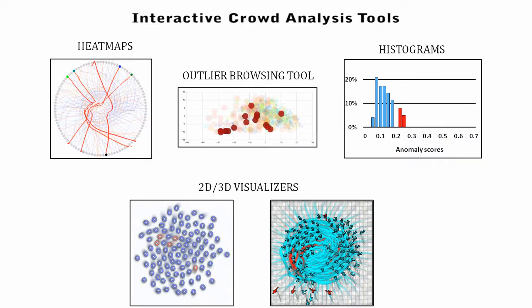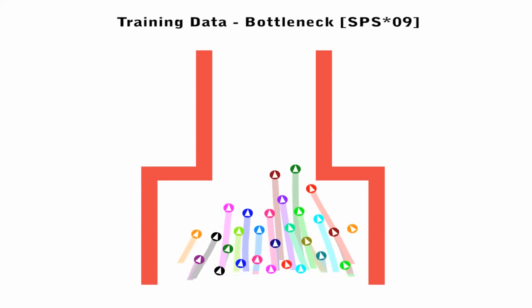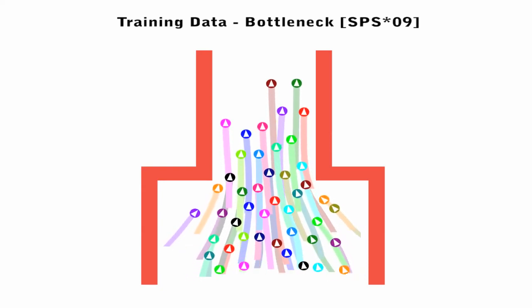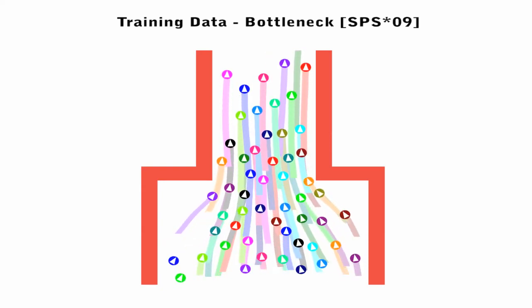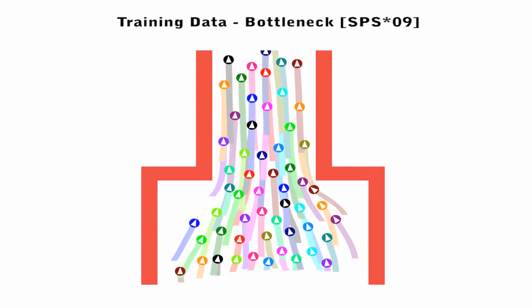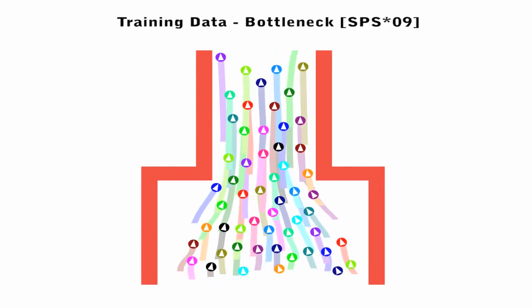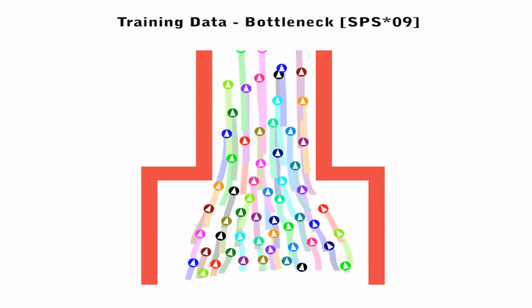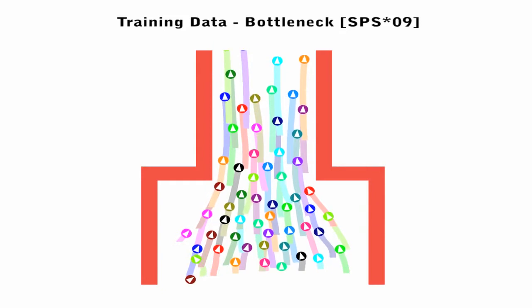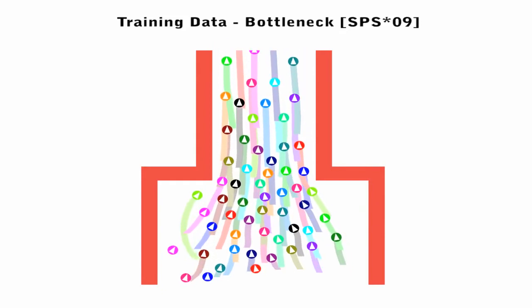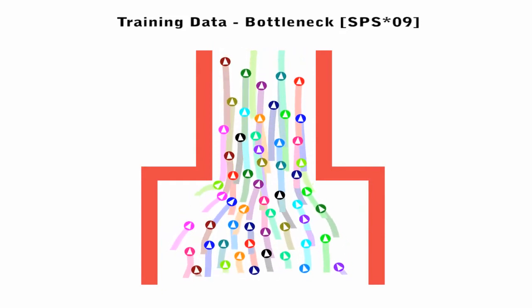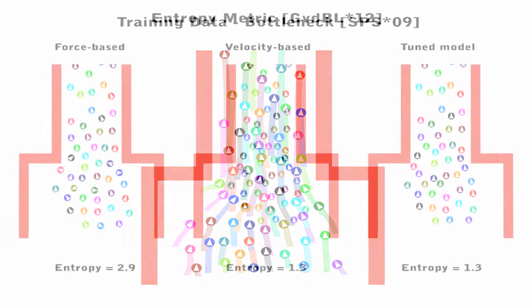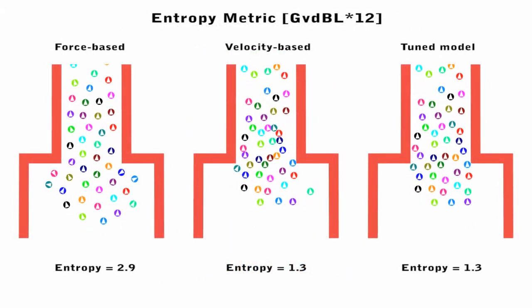Overall, our front end offers different options for visual crowd analysis. Here we show data of real pedestrians navigating through a bottleneck. Three different simulation models were run under the same conditions.